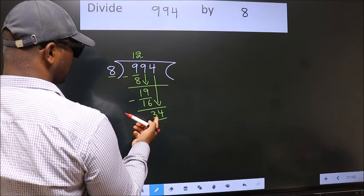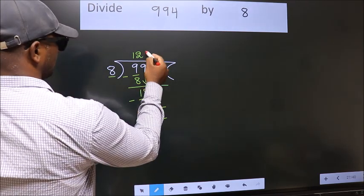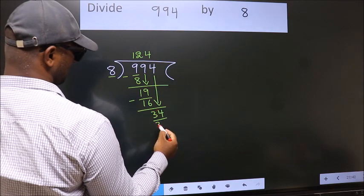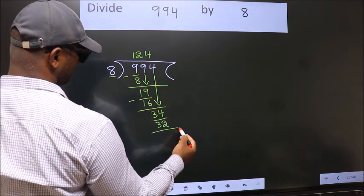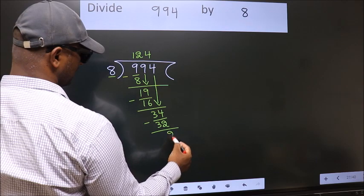A number close to 34 in 8 table is 8 fours 32. Now we subtract. We get 2.